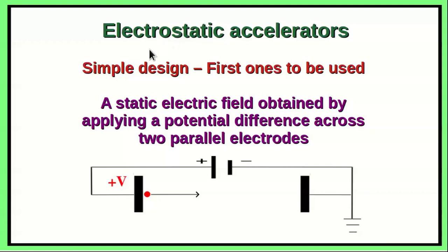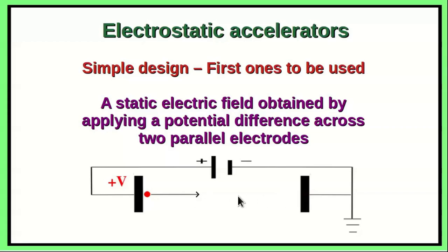Electrostatic accelerators have simple design and were the first ones to be used. A static electric field is obtained by applying a potential difference across two parallel electrodes using a suitable power supply. A positive ion situated near the anode experiences a force driving it towards the cathode, gaining energy in that process. On the other hand, a negatively charged ion generated near the cathode experiences a force in the opposite direction and gets accelerated towards the anode.